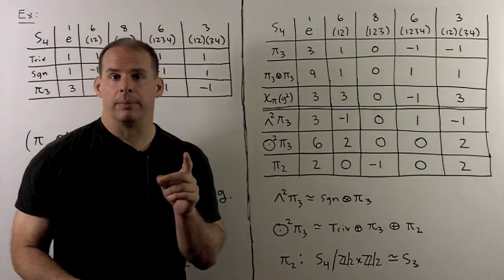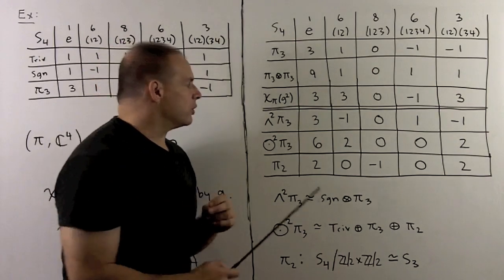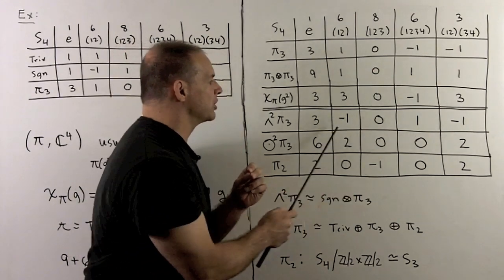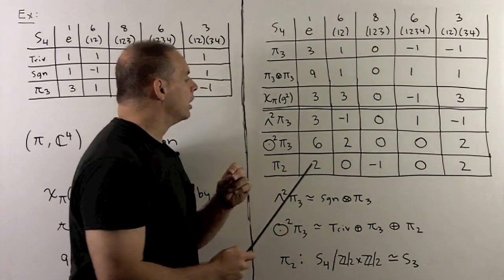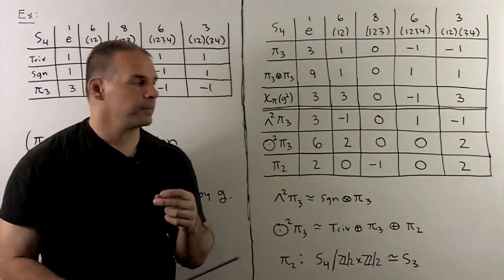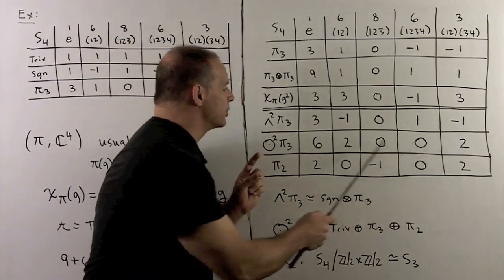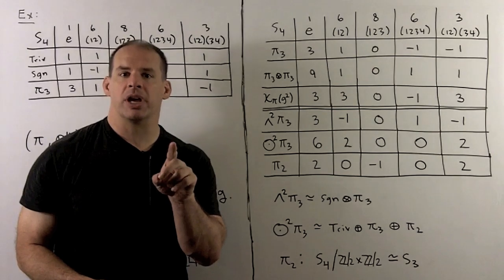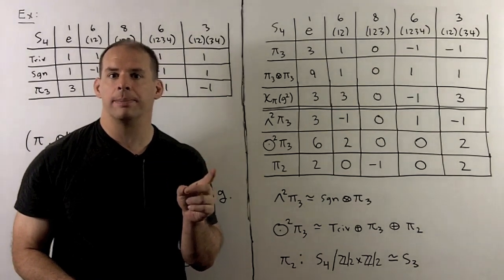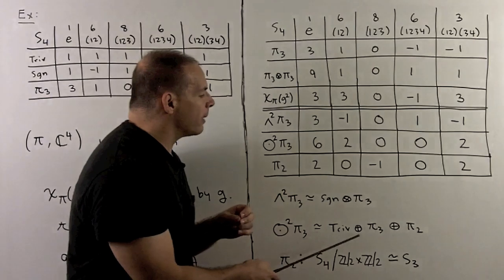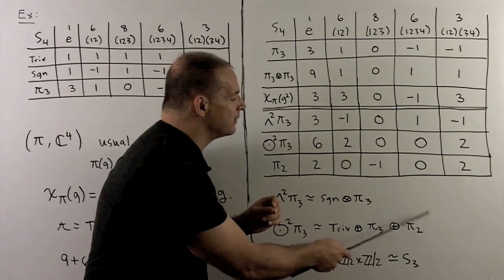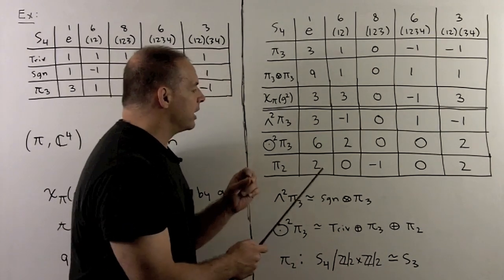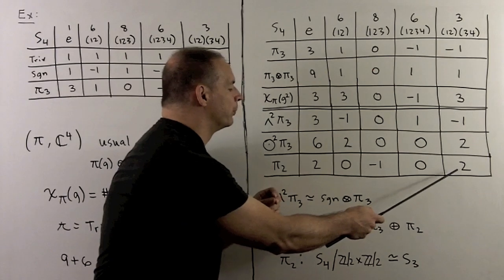An easier way to get this one is to note it's pi_3 tensored with the sign representation, which changes the sign on those two entries. Looking at symmetric two-tensors, we get these numbers. Taking the weighted sum of squares, we see we have three irreducible types each with multiplicity 1. Checking multiplicities, we see we get a trivial, a pi_3, and then something else which will have dimension 2. We subtract off the characters for these and get 2, 0, minus 1, 0, 2.